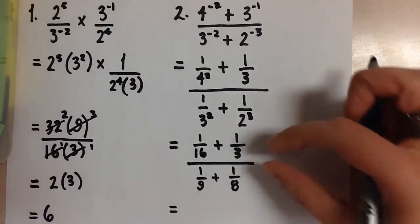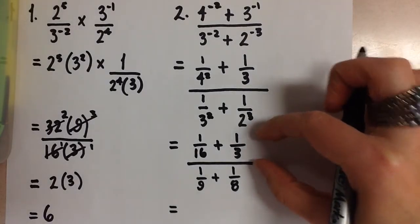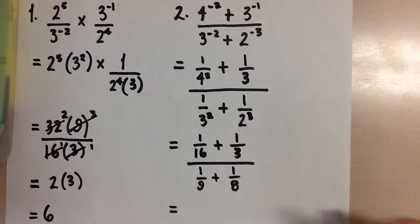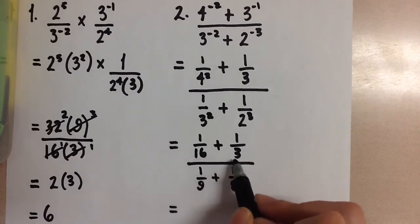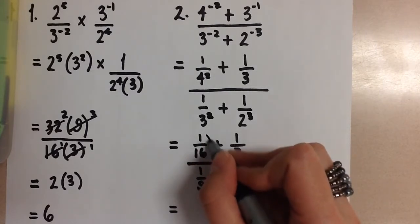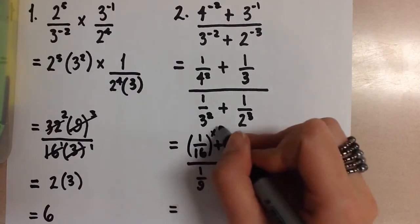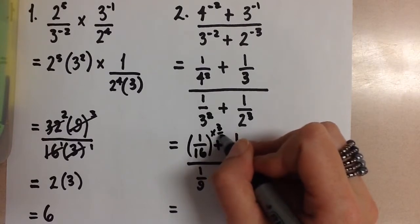So we need a common denominator in the top portion only. The common denominator here is going to be 48 because the lowest common multiple between 16 and 3 is 48. So to do that remember that we have to multiply the whole fraction by 3 over 3. And on this side we're going to multiply the whole fraction by 16 over 16.